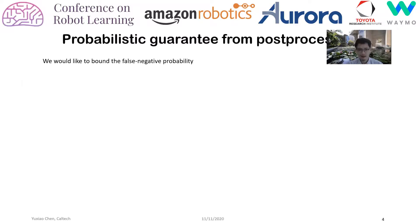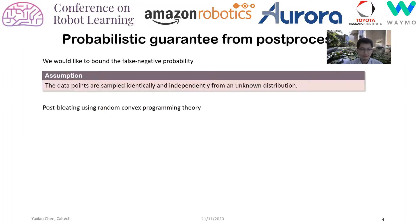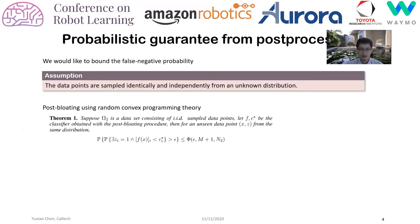If you act boldly based on a false negative, it might eventually lead to a crash. We use one assumption: that data points are sampled identically and independently from the nominal distribution, but we don't assume anything about the distribution itself — it can be Gaussian or something else. With that, we propose a post-bloating scheme that uses the RCP theory.